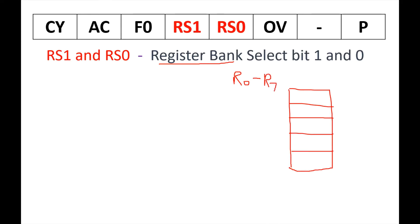R0 to R7 are present in bank 0, bank 1, bank 2, and bank 3 — these 8 registers are repeated in all 4 banks. When you write R0 in a program, you need to specify which bank it belongs to. Before using any register R0 to R7, you should first select the bank, and to do so you use the RS1 and RS0 bits.